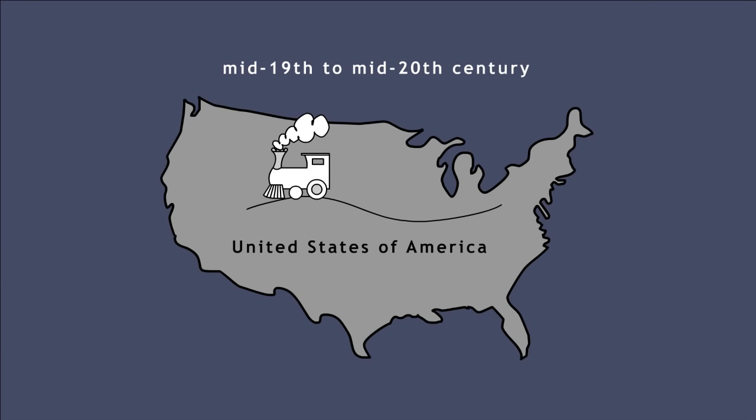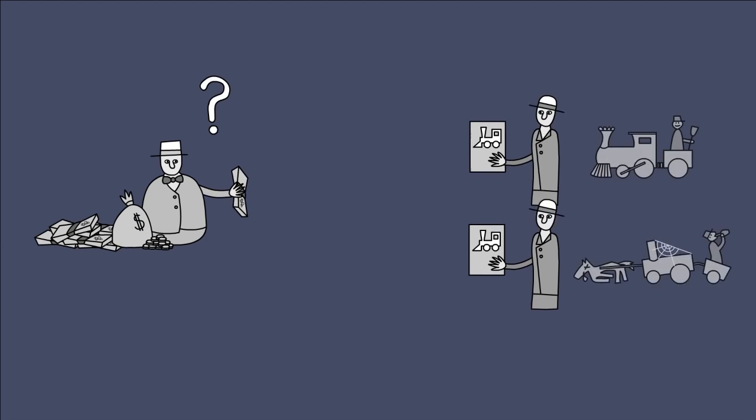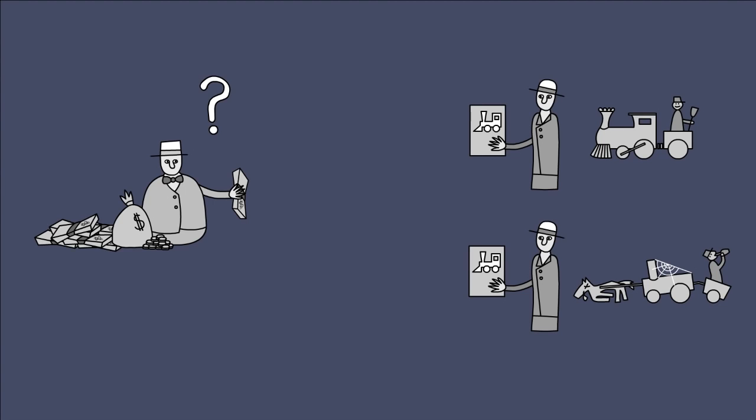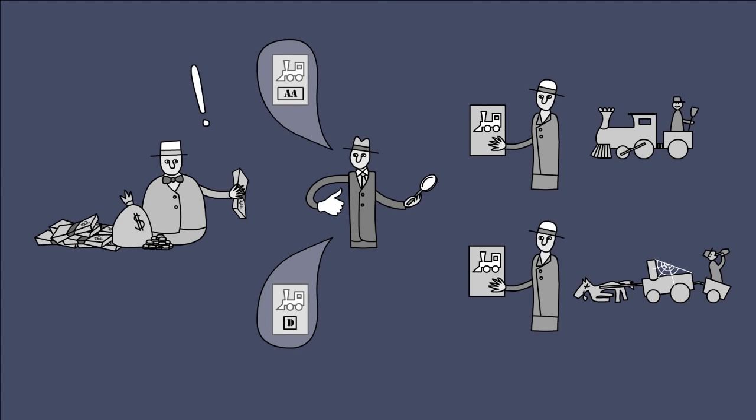Credit rating agencies were created during the railroad construction era. Railway companies needed loans to pay for workers and material. Investors sought opportunities to invest their money profitably, but did not know which entrepreneurs would be able to repay the loans with interest. Rating agencies were created to assess the creditworthiness of companies. The result of these evaluations were then sold to investors in the form of credit ratings.